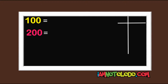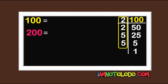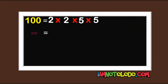So let's start with 100. 2 in 100 is 50, 2 in 50 is 25. 2 cannot divide 25 so we use 5. 5 in 25 is 5, 5 in 5 is 1. So let's write this: 2 times 2 times 5 times 5. Let's do the same thing for 200.